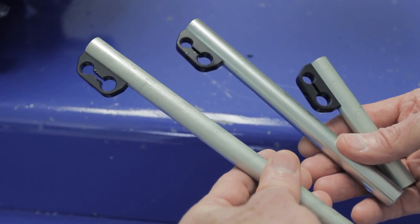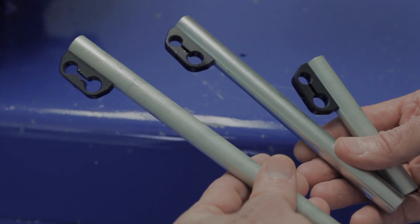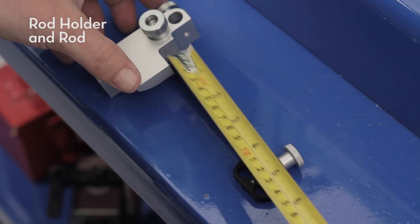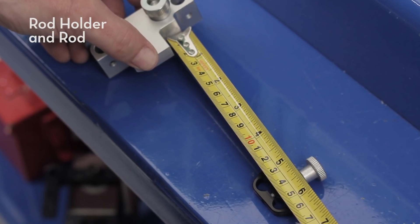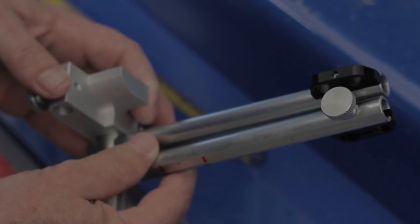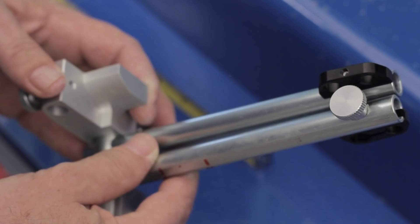Select the appropriate rod length. From the rod holder, the rod should extend one inch shorter than the distance you measured between the two V-brackets. Set the second rod to the same length in the second rod holder.